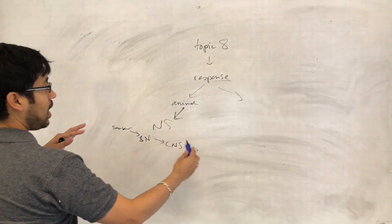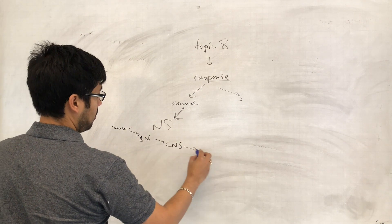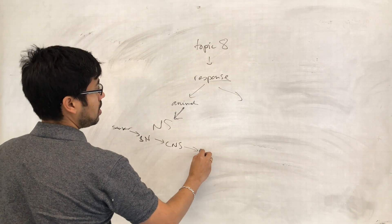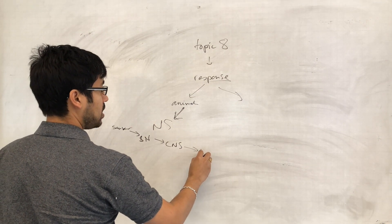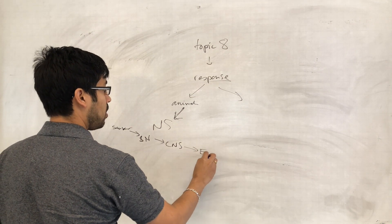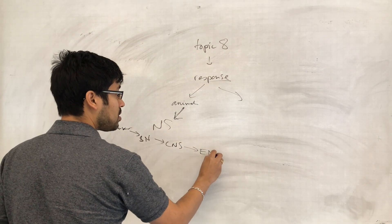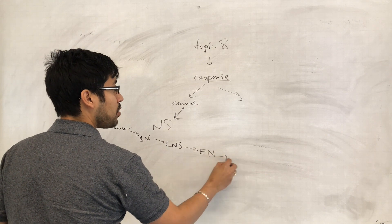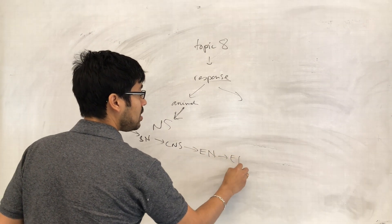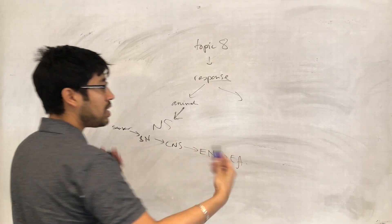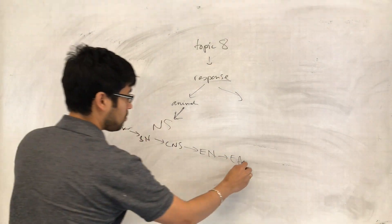After processing in the central nervous system, the impulses are then generated in the effector neurons, which stimulate the effector to make a response.